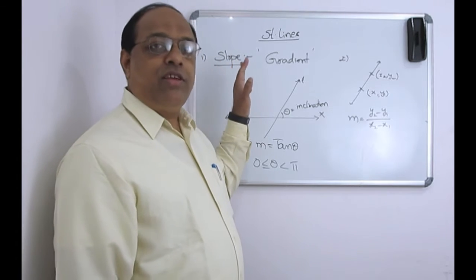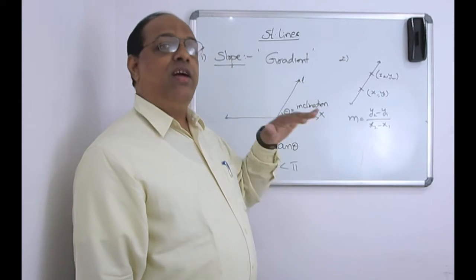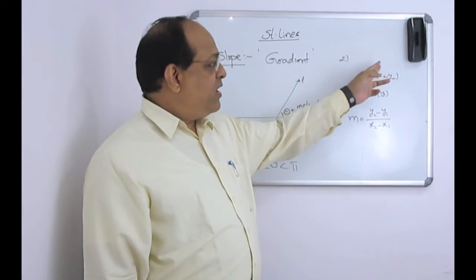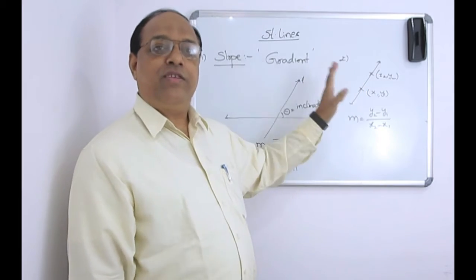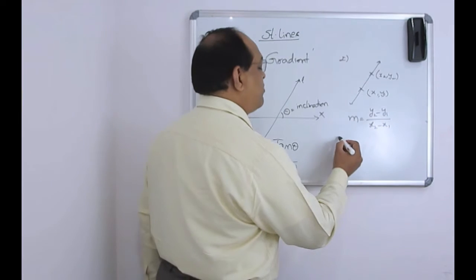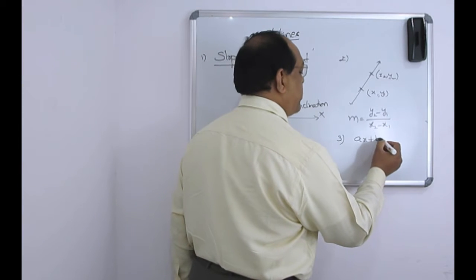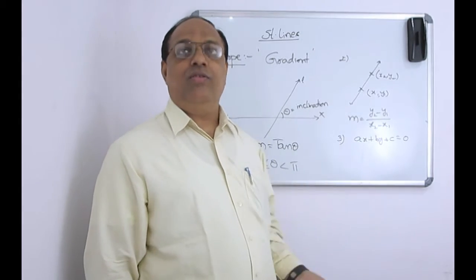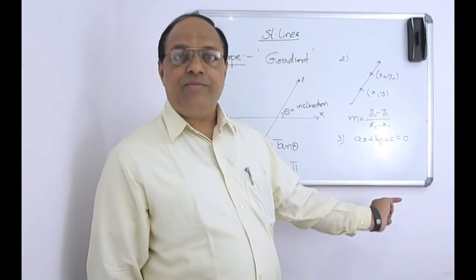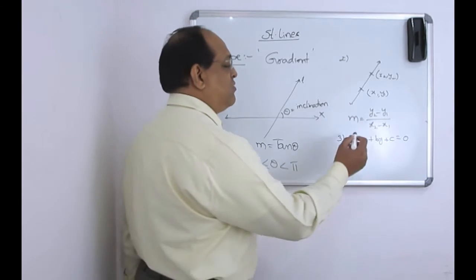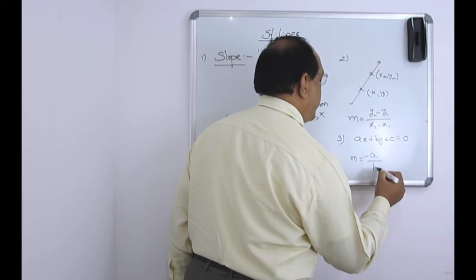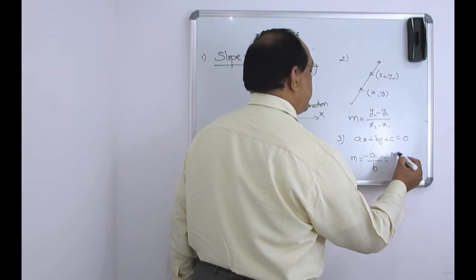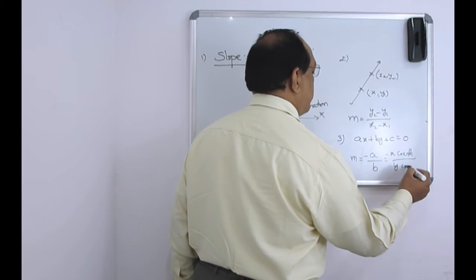So I explained two cases: one is when the inclination is given, how to find the slope; similarly, when the line is passing through two points, what is the slope. Similarly, if the equation of the straight line is given as ax plus by plus c is equal to 0, which is known as the general equation of the straight line, then what is the slope?